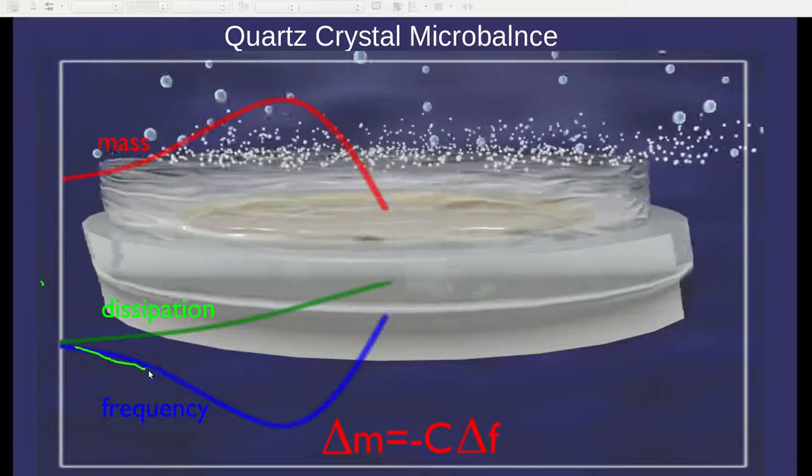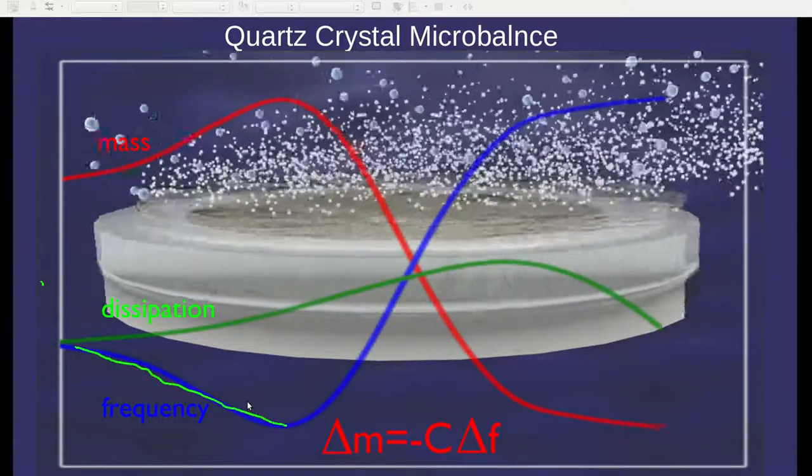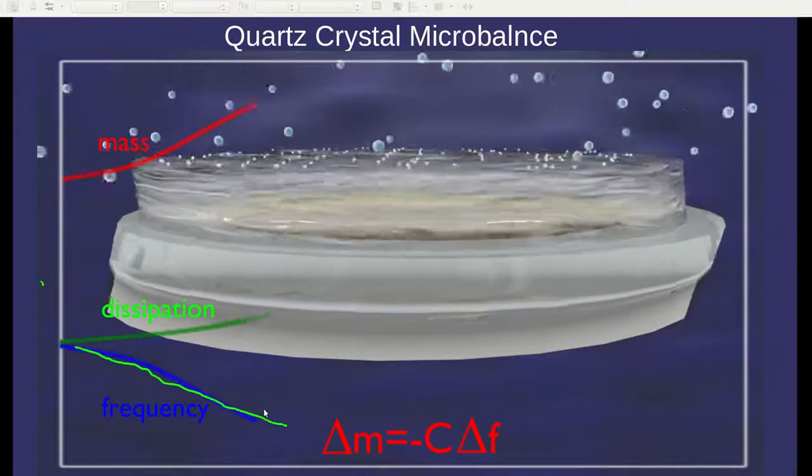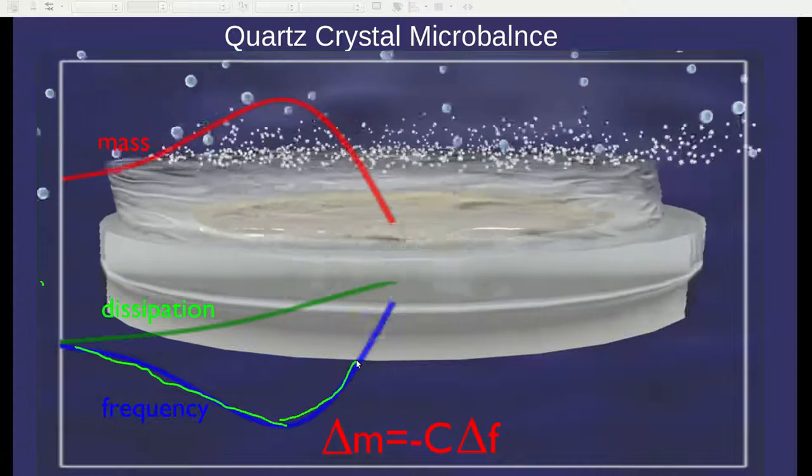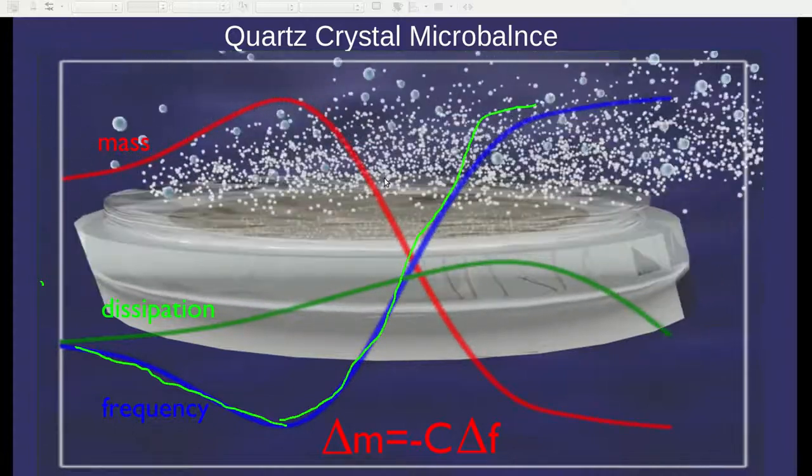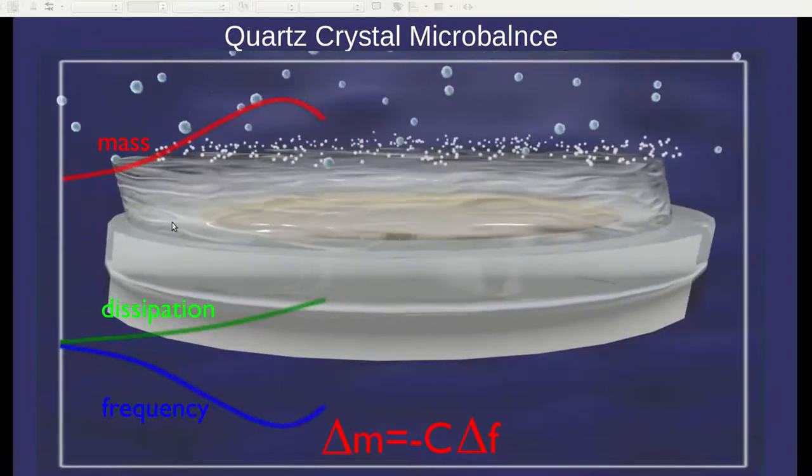Observing the frequency curve, it starts out at a decreasing frequency with time as the polymer swells and gains mass. With time, the polymer starts to dissolve, the frequency shifts up, and then plateaus as it fully dissolves. The mass is the negative of that change in frequency.